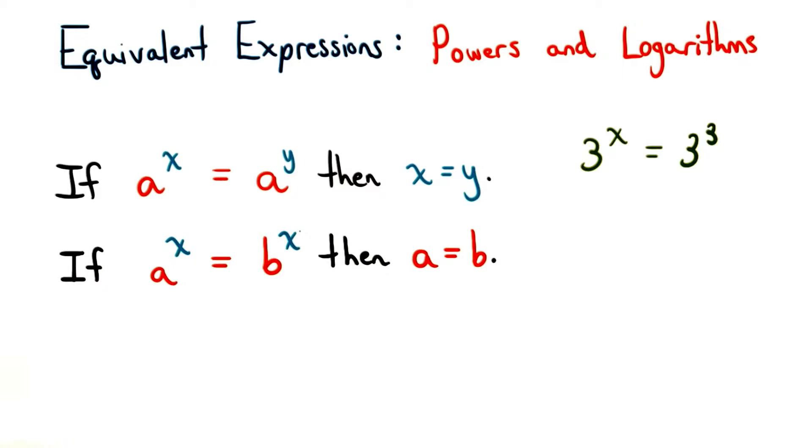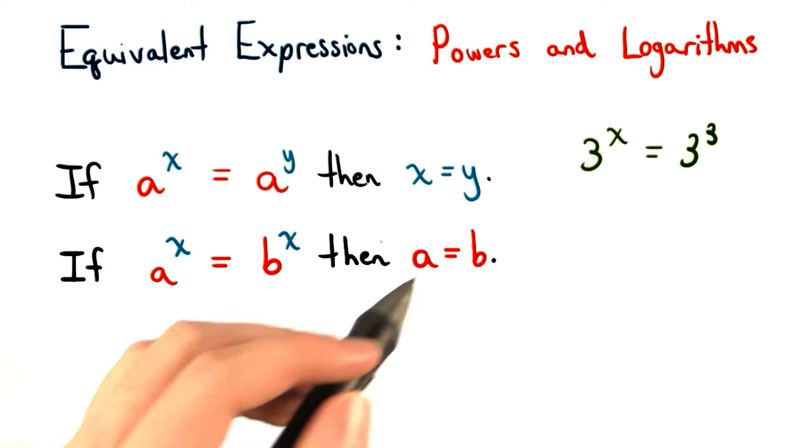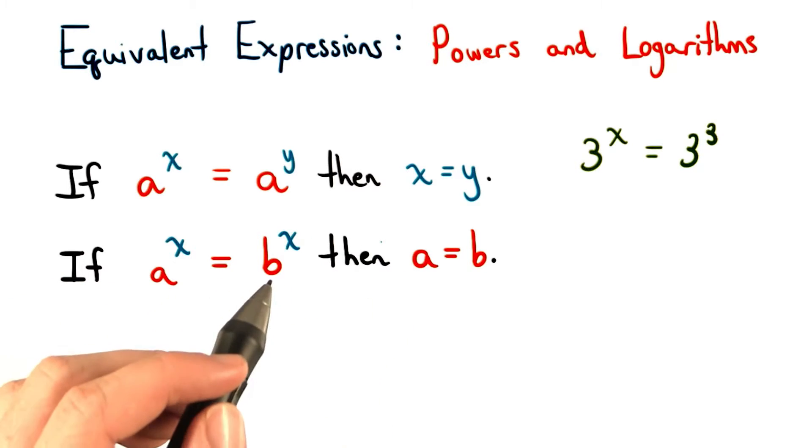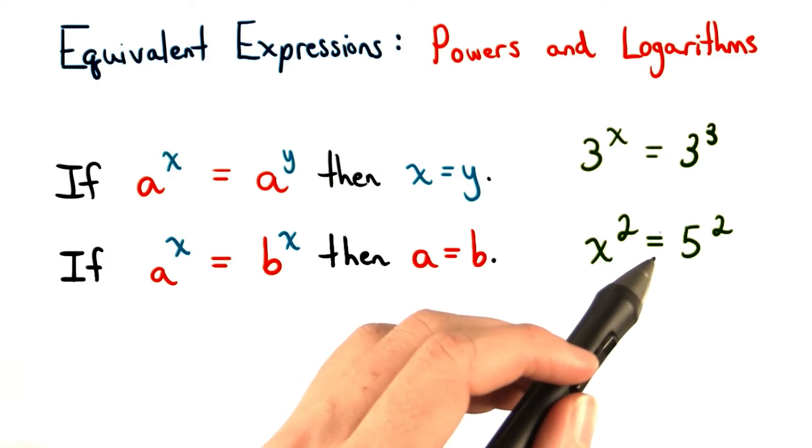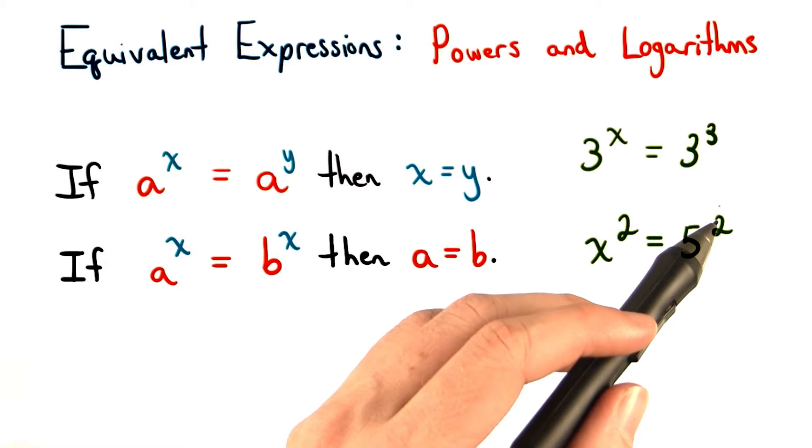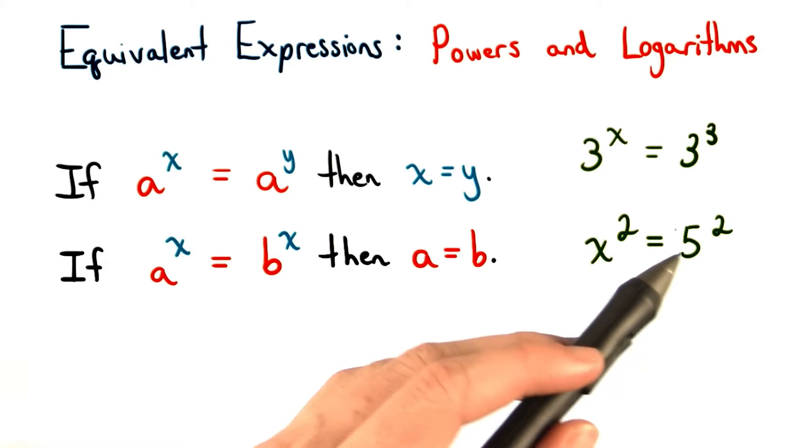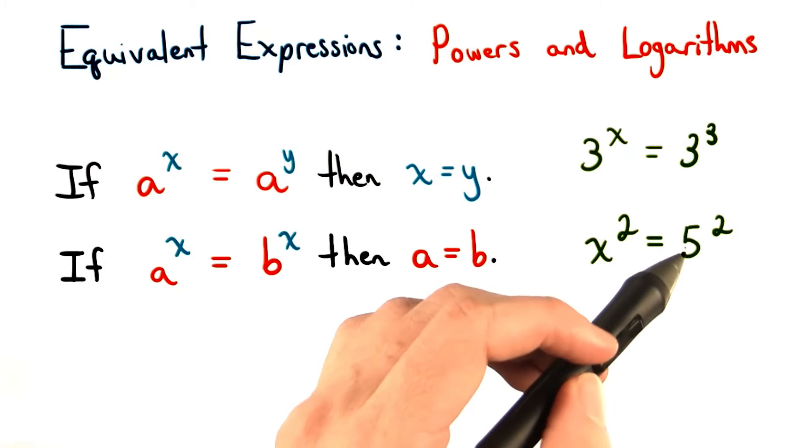The next fact that can help us solve equations with logarithms is that if a^x equals b^x, then we know that the base a must equal the base b. We see this in a problem like this: x² equals 5². Well, we know since these are both squares, then x must be equal to 5 in order for this amount on the left to be equal to this amount on the right.